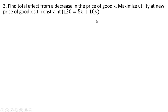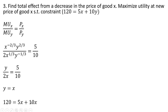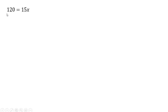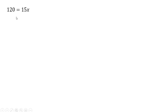The next step is to find the total effect from the decrease in the price of good X. We maximize utility at the new lower price of good X. The constraint becomes 120 equals 5X plus 10Y. Setting up the utility maximizing condition and plugging in the marginal utilities from step one with the new prices, and simplifying, we get Y equals X. Substituting into the budget constraint gives us 15X equals 120, so X equals 8, and since Y equals X, Y also equals 8.